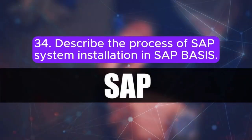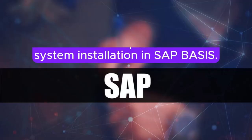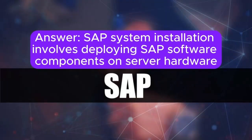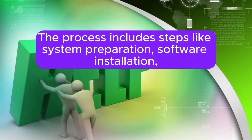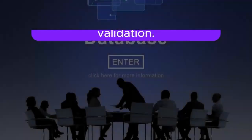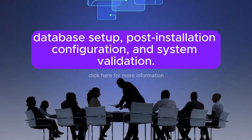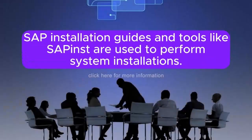Question 34: Describe the process of SAP system installation in SAP BASIS. SAP system installation involves deploying SAP software components on server hardware and configuring them to create a functional SAP system landscape. The process includes steps like system preparation, software installation, database setup, post-installation configuration, and system validation. SAP installation guides and tools like SAP Inst are used to perform system installations.